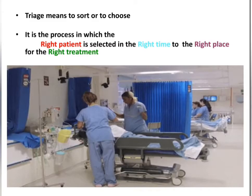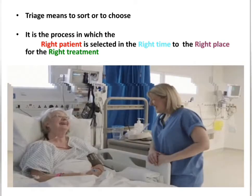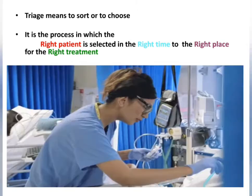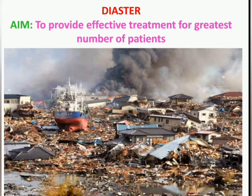Triage means to sort or to choose. It is the process in which the right patient is selected at the right time, to the right place, for the right treatment. You can broadly divide triage into two categories: disaster and non-disaster management. The aim for triage during a disaster is to provide effective treatment for the greatest number of people — here we are more worried about quantity in saving lives, and quality comes as the next step.